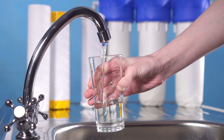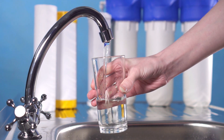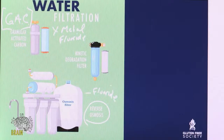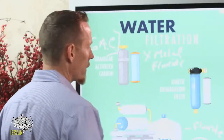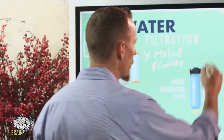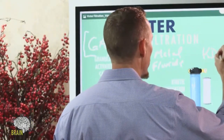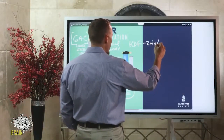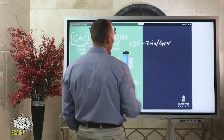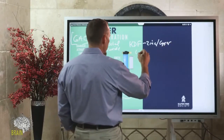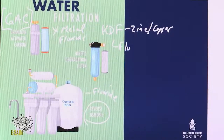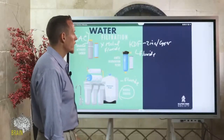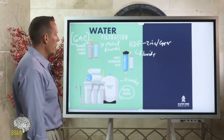KDF — kinetic degradation fluxion — is a type of filter often abbreviated as KDF. It's a zinc and copper granular filter, and it will pull some fluoride, but it's just not efficient or super effective. You'll get some pull but not great pull with a KDF-style filter.